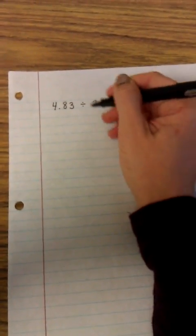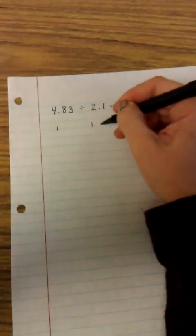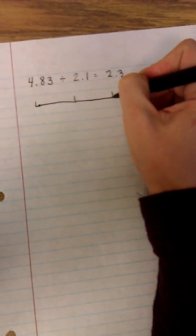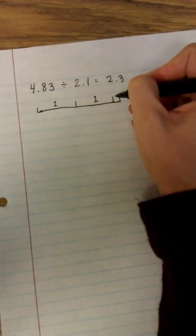So what I'm doing is I'm going to put my first factor, the divisor, I'm going to draw it and represent it like this. That's going to be one whole and then another one whole and then this is going to represent a tenth. So there's one, two, and one tenth right there.